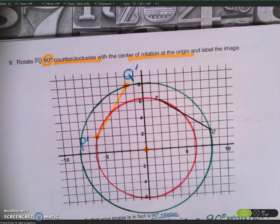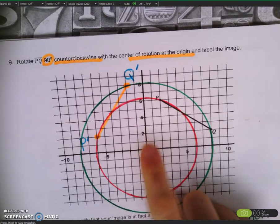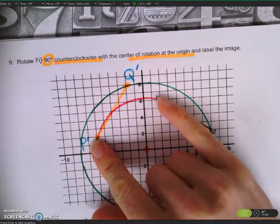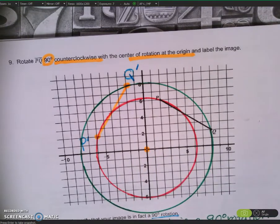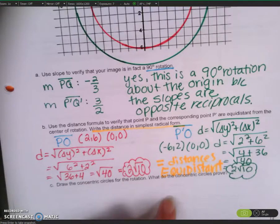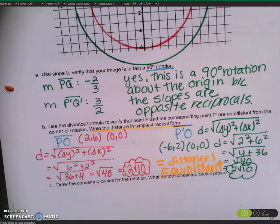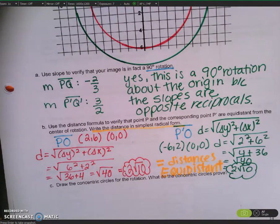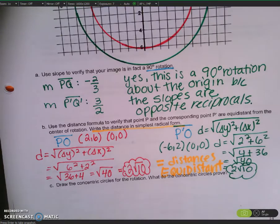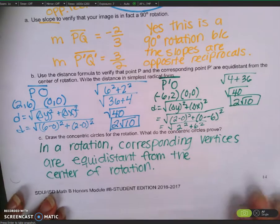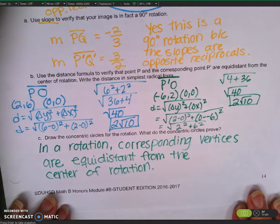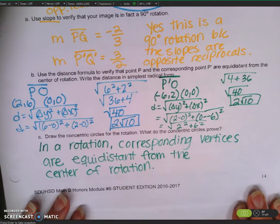Because of the definition of a circle — the set of all points that are equidistant from a center point — if two points lie on the same circle, it means those two points are equidistant from our center of rotation. So what do the concentric circles prove? Our concentric circles prove that corresponding vertices are the same distance away from your center of rotation. In a rotation, corresponding vertices are equidistant from the center of rotation because they share the same center as concentric circles.